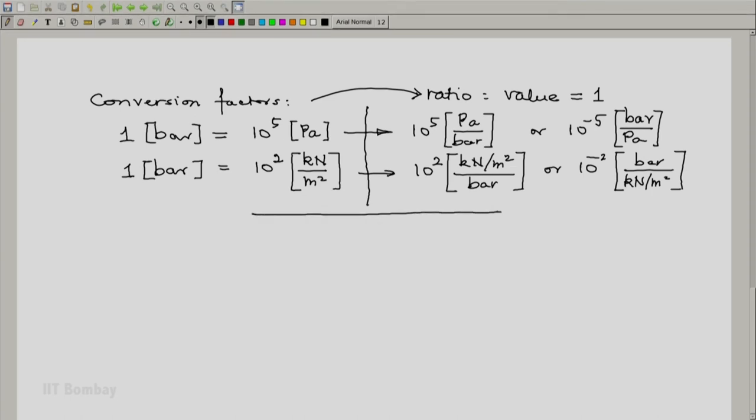Now let's go back to our earlier solution. We determined that the expansion work was 0.02644 bar meter cube. Since we want to go to kilojoules, we'll use a conversion factor that allows us to get rid of bar and convert it into kilo Newton. This is the conversion factor that's useful.